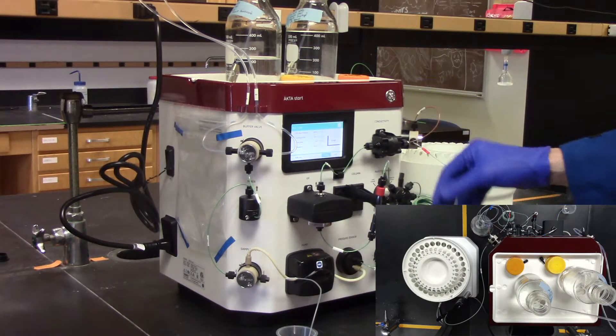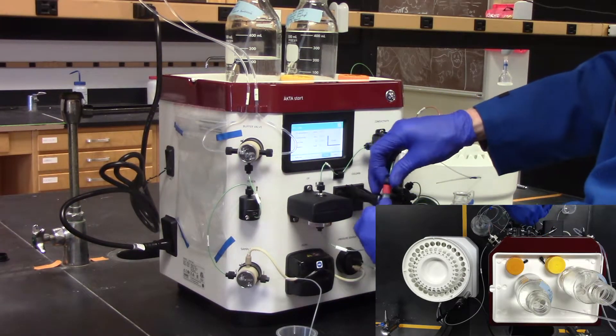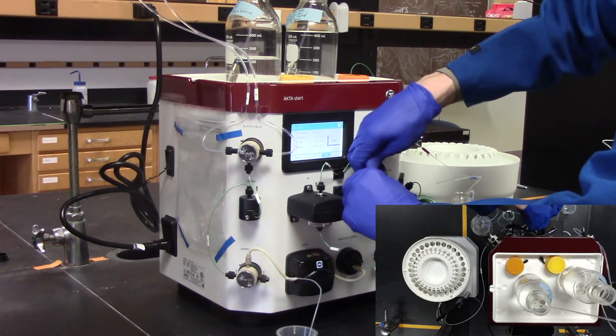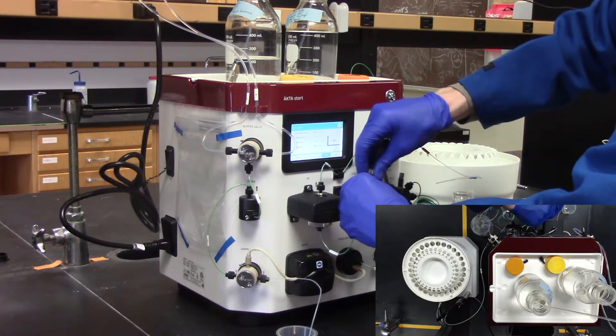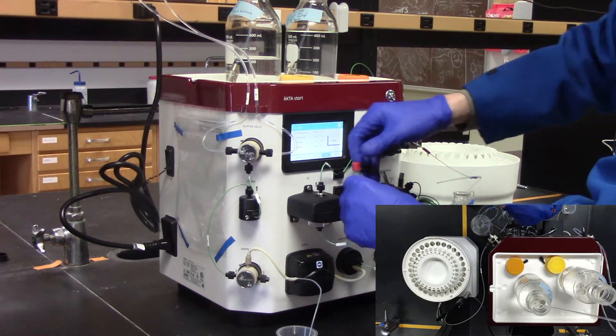End the program and remove your FPLC column. If you have used a USB drive, you can save your chromatogram to the USB drive.